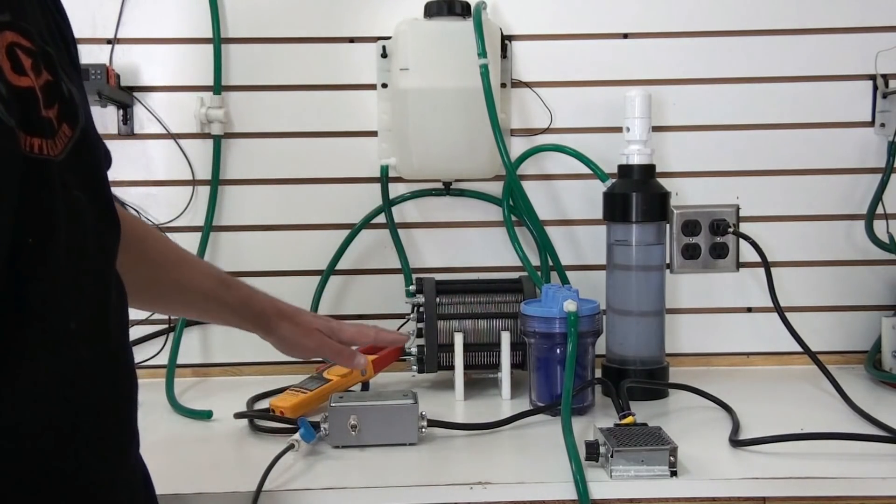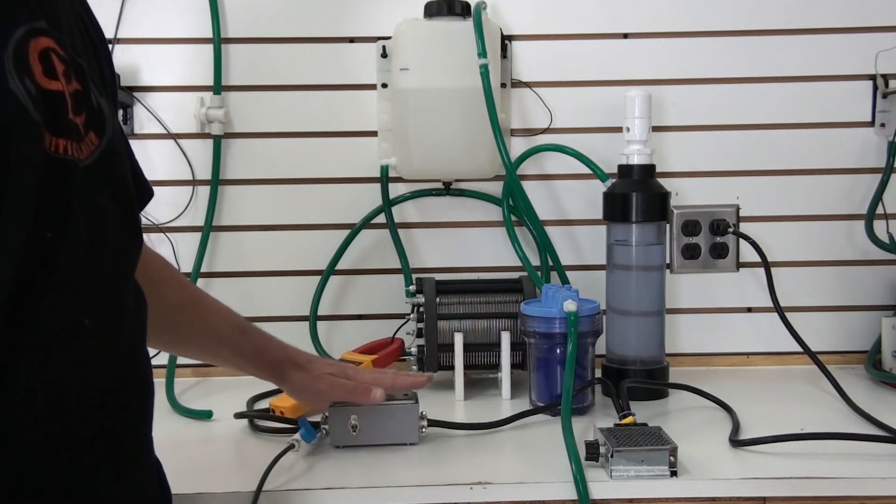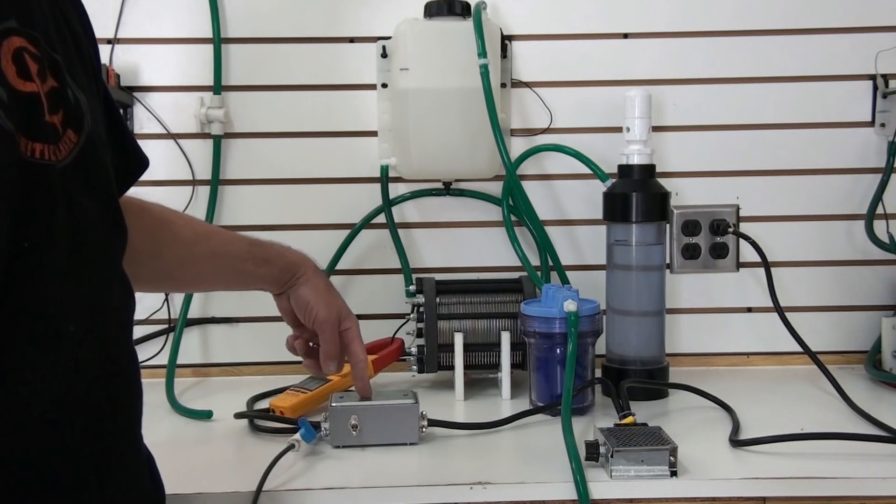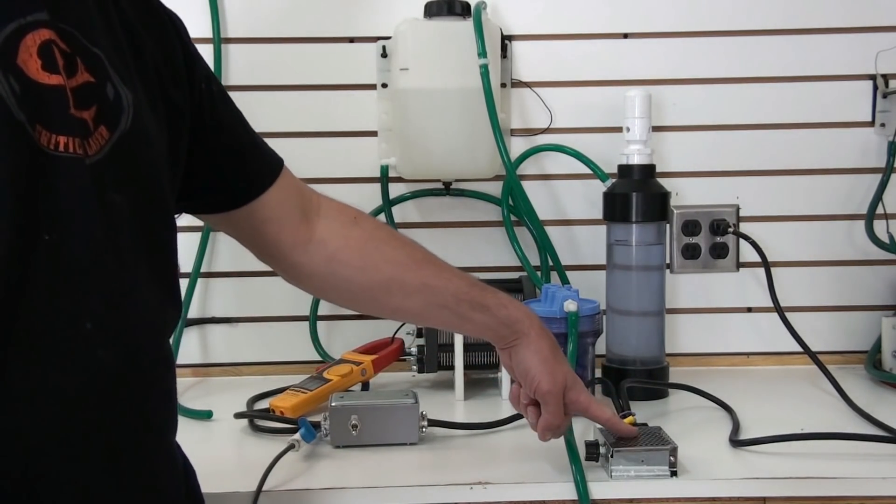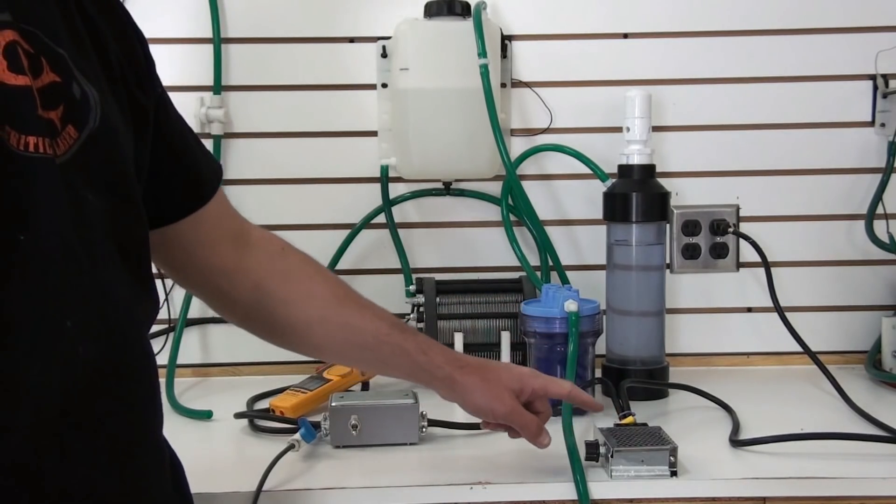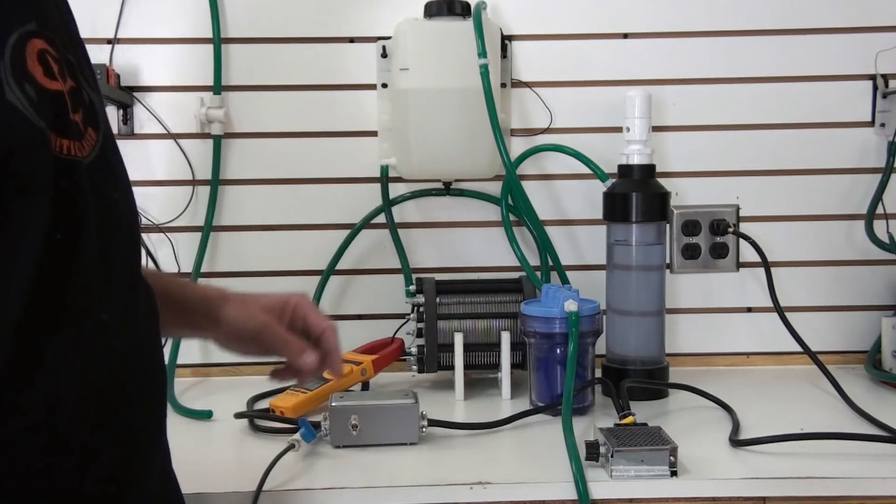You can also see that we've got our AC to DC converter right here. This converts AC power to DC power that feeds the generator. And right here we have our variable controller so you can control the output of this system.